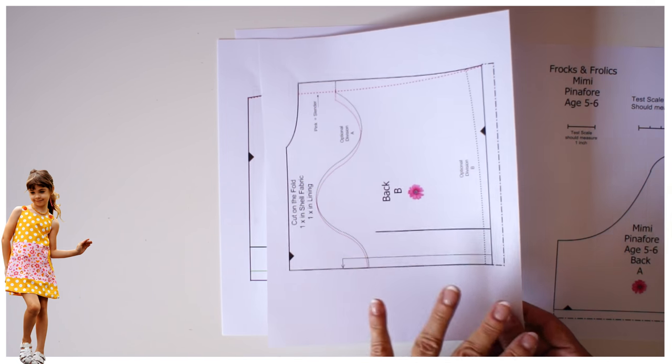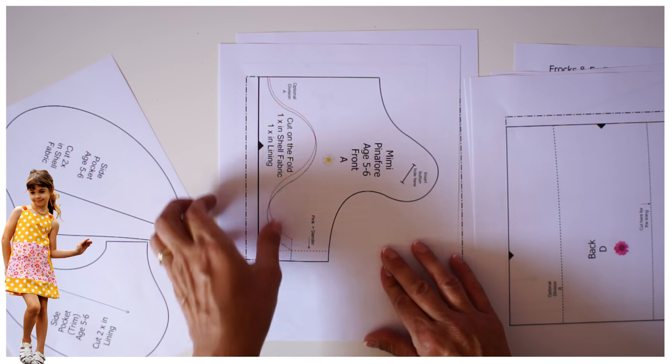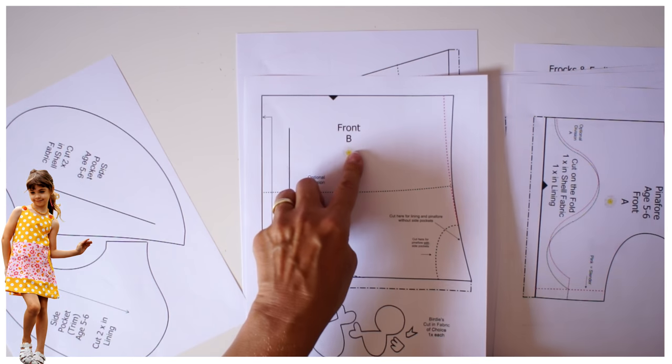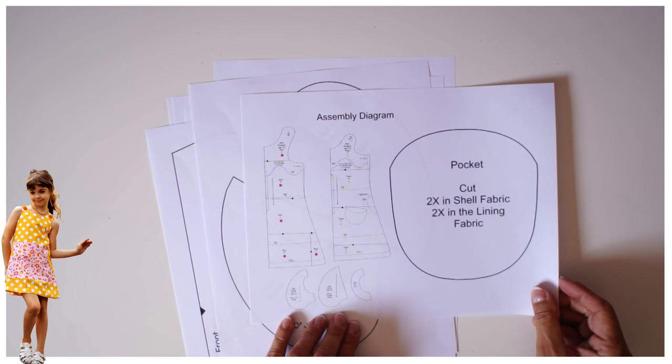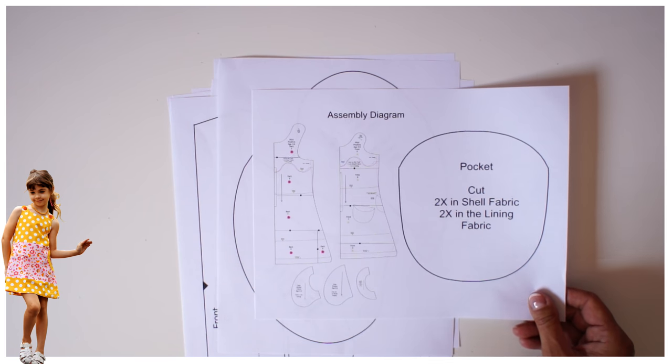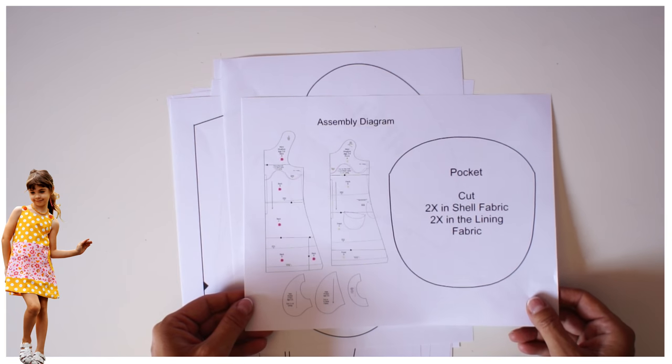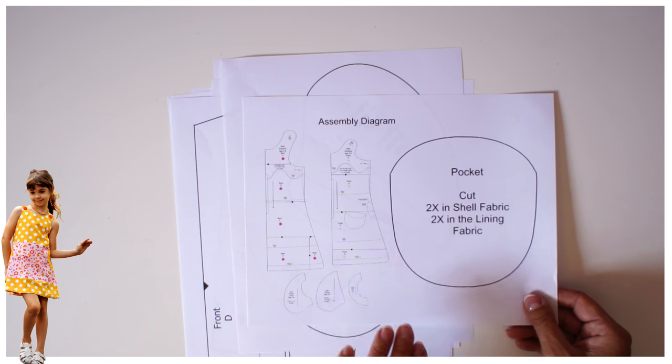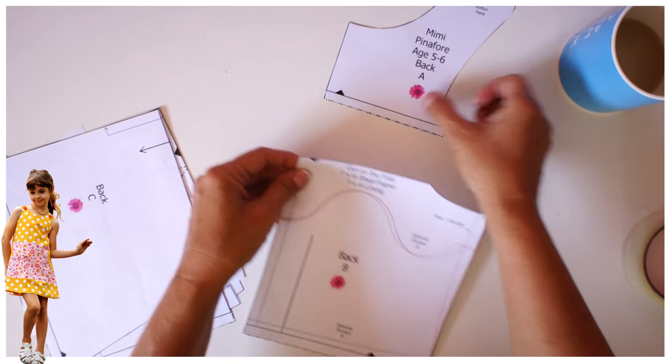The back has got a pink flower on it so you know, aha, that goes together. The front has got the white flower that you can see here, and I know all of this is my front. When you look at the assembly diagram, you can see exactly how it goes together. For five to six, you can see we have A, B, C, D, and E. Of course, you have more pieces for the larger sizes and less pieces for the smaller sizes. This is why the assembly diagram is really important.